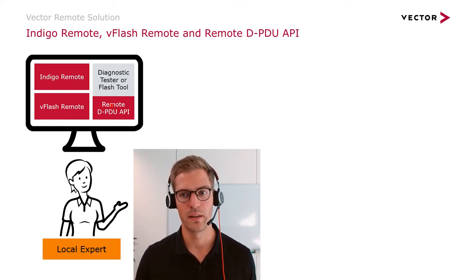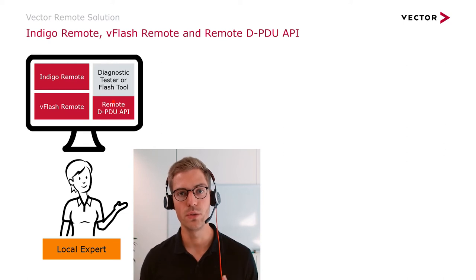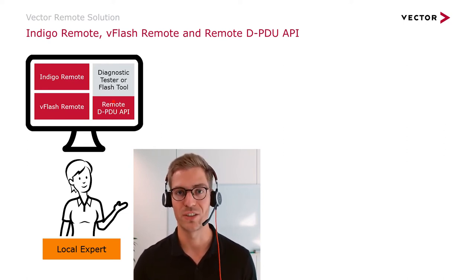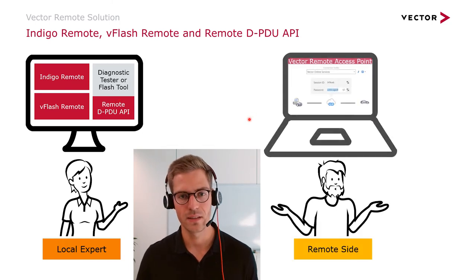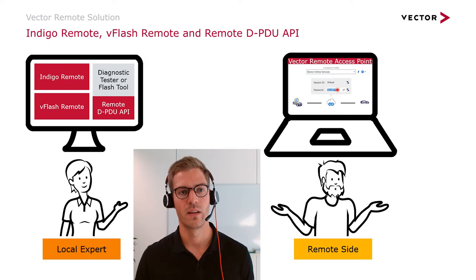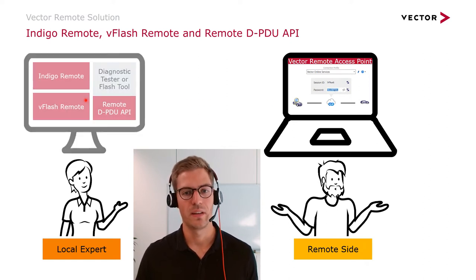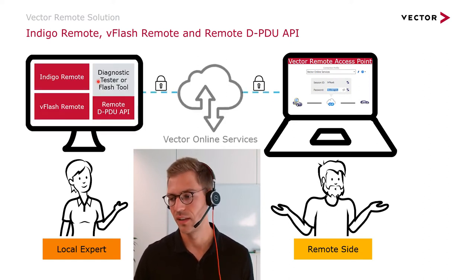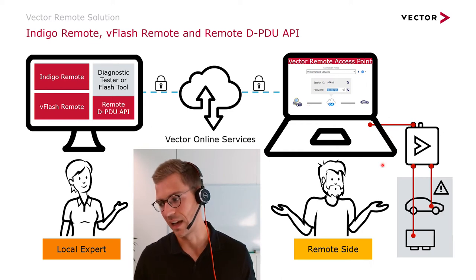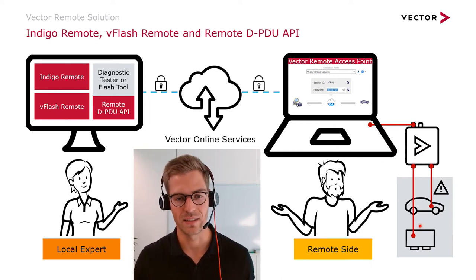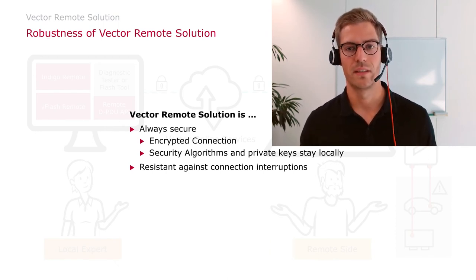With the Remote DPDU API, you can empower your diagnostic tester or your Flash tool with remote functionality. The only thing you have to do is exchange your local DPDU API with our Vector Remote DPDU API. On the remote side, we have a second tool running on a computer — this is the Vector Remote Access Point. The local expert can establish a remote connection via the Vector Online Services to the Vector Remote Access Point and via the connected VCI to the object under test.